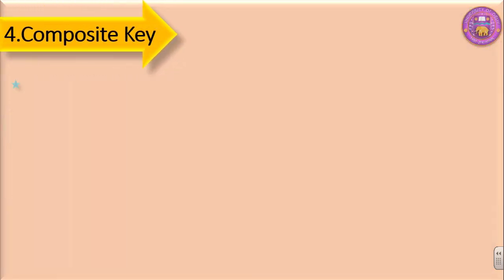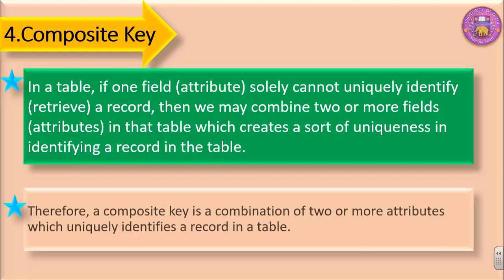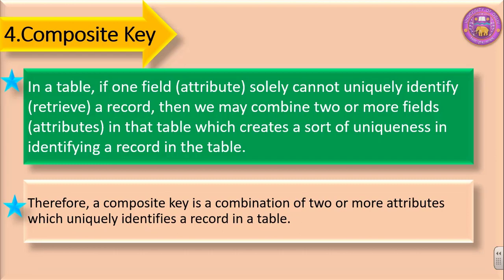Composite key: In a table, if one field or attribute solely cannot uniquely identify or retrieve a record, then we may combine two or more fields or attributes in that table which creates uniqueness in identifying a record. Therefore, a composite key is a combination of two or more attributes which uniquely identifies a record in a table.